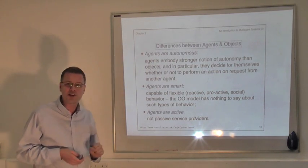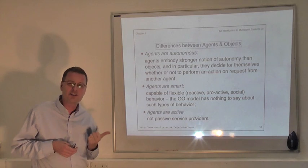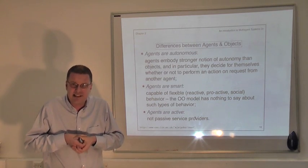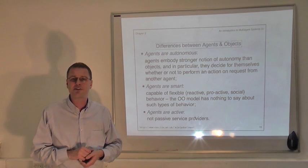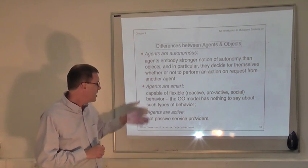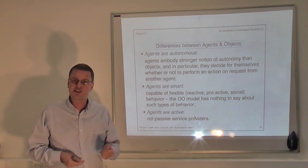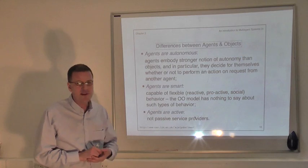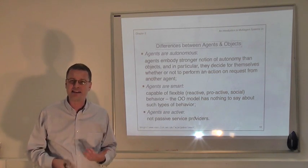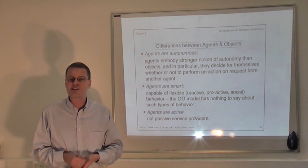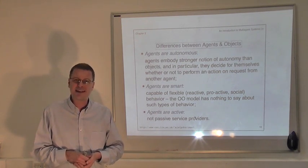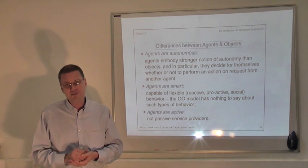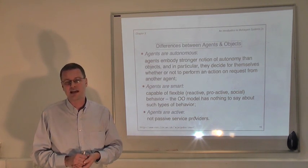In summary: agents are autonomous — they embody a stronger notion of autonomy than objects do. Objects have autonomy over their state, but agents have autonomy over their behaviour. Agents have reactive, proactive, and social behaviours that we've talked about previously. And finally, agents are active entities, continually deciding what to do next, whereas objects are essentially passive service providers, waiting to be told what to do. That, in my view, sums up the main differences between objects and agents.